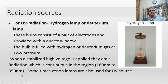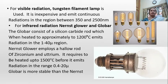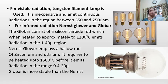Sometimes xenon lamps are also used as a UV source. For the visible region, a tungsten filament is used. It is inexpensive and emits continuous radiation in the region between 350 and 2500 nanometers.